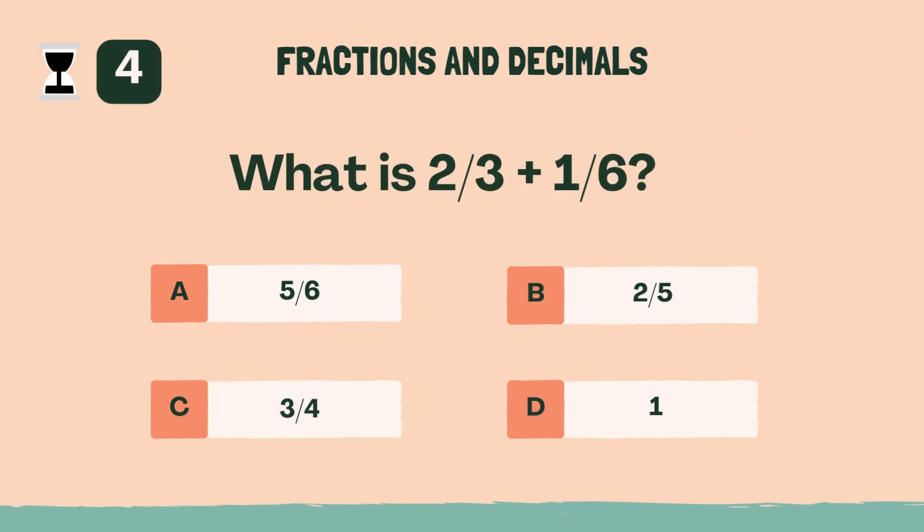What is two-thirds plus one-sixth? A, five-sixths.